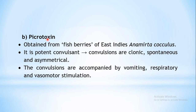The next drug is picrotoxin. This is also a naturally obtained substance, obtained from the fish berries of Anamirta cocculus. It is again a potent convulsant producing convulsions that are clonic, spontaneous, and asymmetrical — the spread is asymmetrical in both hemispheres. Along with convulsions, it also precipitates vomiting, and respiratory and vasomotor stimulation.